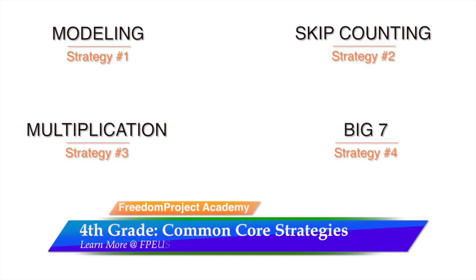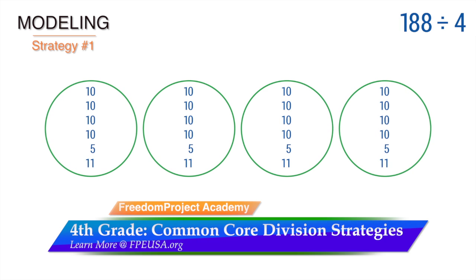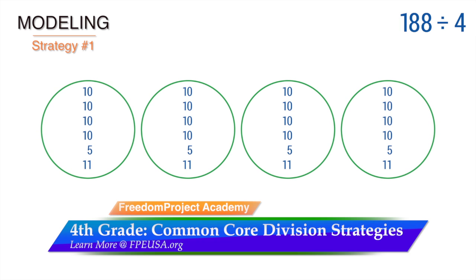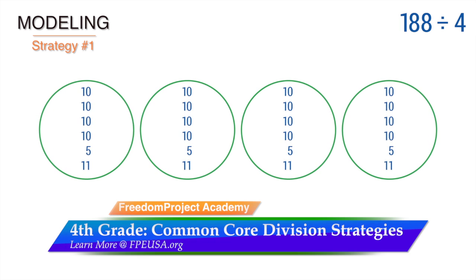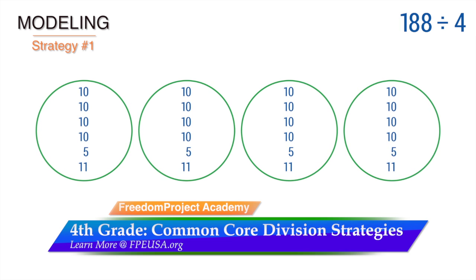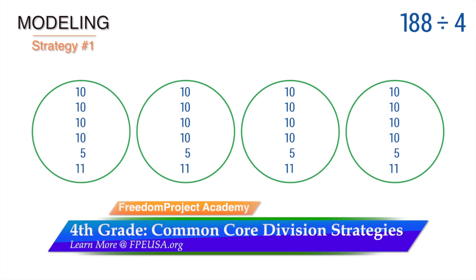Common Core teaches students to use strategies to find answers to division problems. Let's look at the 4 strategies taught to 4th graders. The first is modeling. In this method, we find the answer by placing equal amounts of the 188 into 4 circles. Students have to guess at how to figure the equal amounts and have to keep track of the amount distributed. Look at the illustration. Multiples of 10s, 5s, and 2s were used. The answer to 188 is found by counting the amount in a circle.